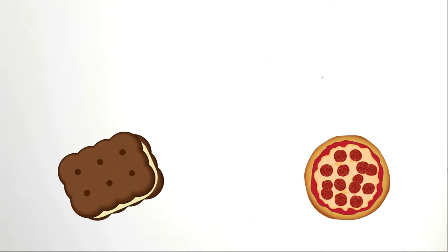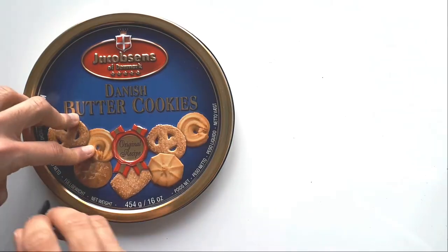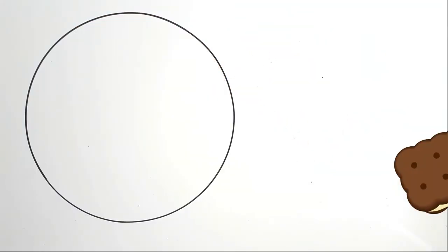Grab something large, flat, and round, like a pizza tray, a biscuit lid, a cooking pan cover, or a mug, and draw a circle around it. I'm using a biscuit lid because I like biscuits. And pie.